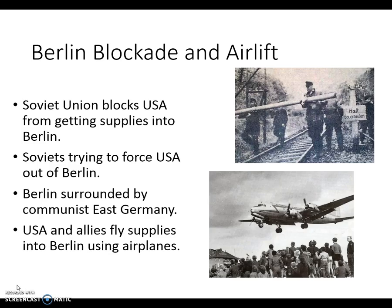After World War II, Germany is broken up into East and West Germany. The Soviet Union is given control of Eastern Germany, and inside of Eastern Germany is the capital of Berlin. The Soviet Union and the United States and the other allies had agreed that the US and allies could use roads, railroads, and canals to move supplies into their sections of Berlin, because Berlin was also broken up into four sections — an East Berlin and a West Berlin. West Berlin was controlled by the Allies: the United States, France, and Great Britain, while East Berlin was controlled by the Soviet Union.